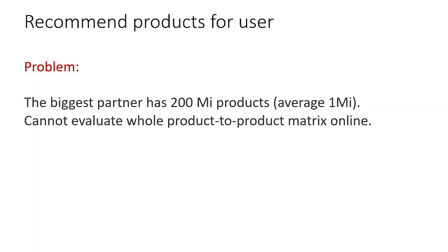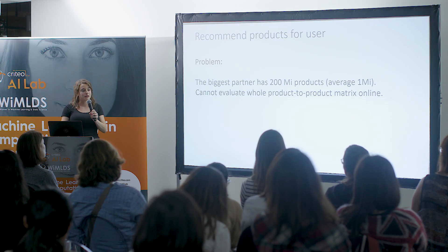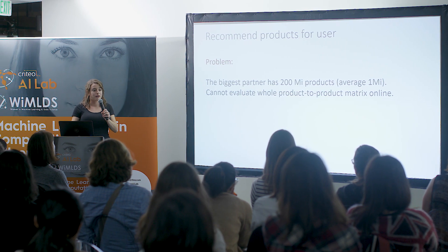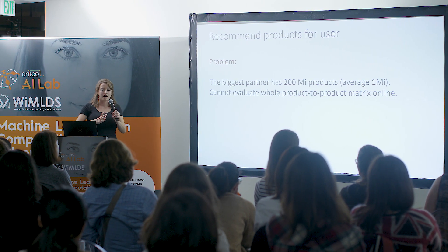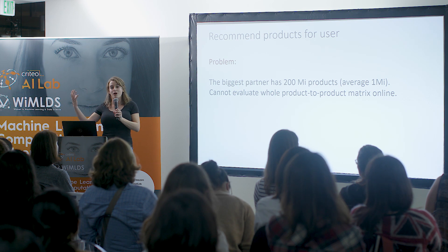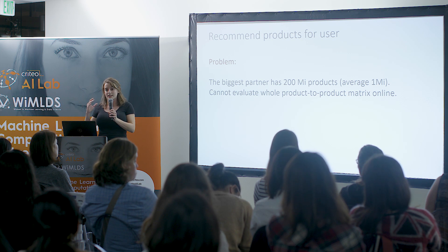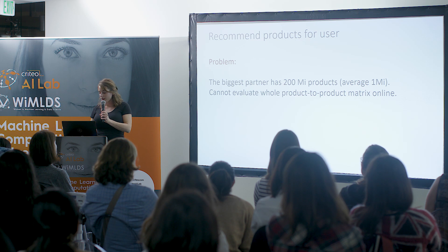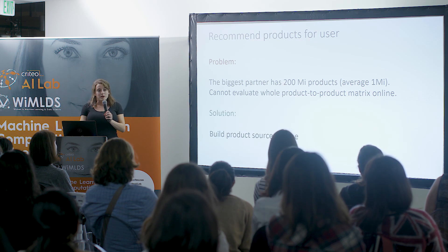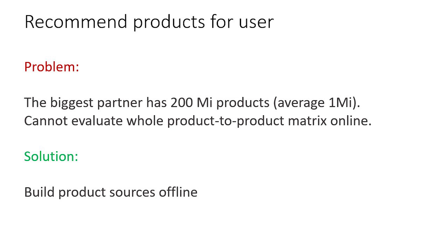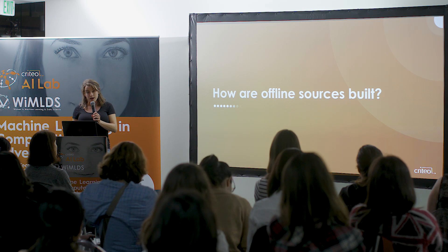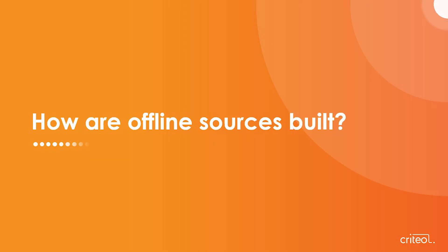The problem is that if we take the biggest partner, they have 200 million products. If we were to evaluate online all the similarities between all the products in a user's browsing data and all the available products of this partner, it would be too large and we cannot do this in 10–15 milliseconds. So the way we do it is offline: we compute some sources of products — product-to-product recommendations — and we're going to see how we build this offline.